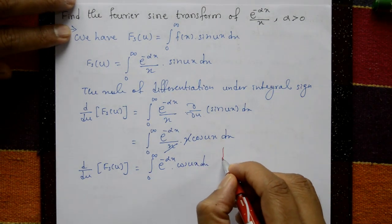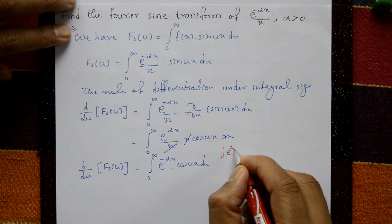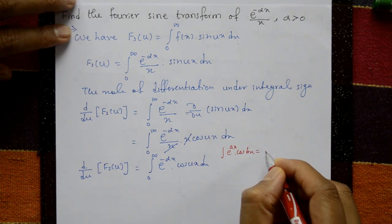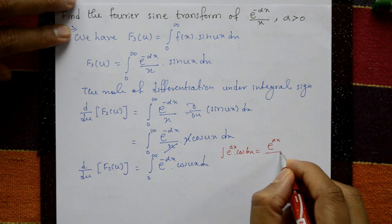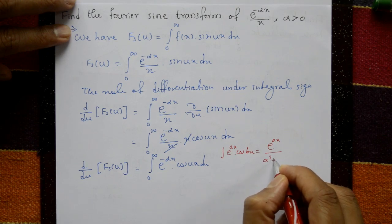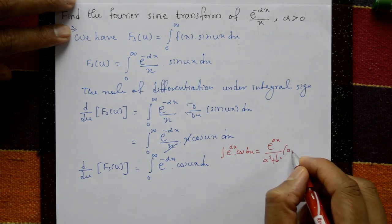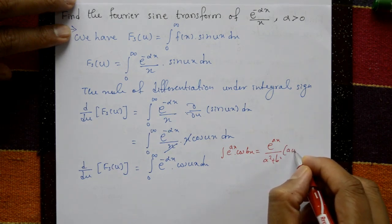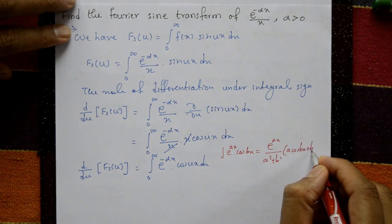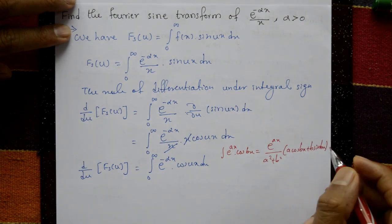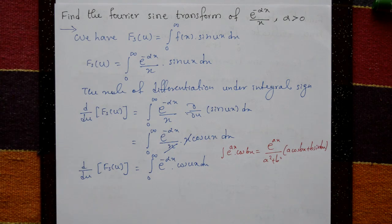Using the standard formula: the integration of e raised to ax into cos(bx) equals e raised to ax over (a squared plus b squared), multiplied by (a cos(bx) plus b sin(bx)). We will apply this standard formula to solve the integral.